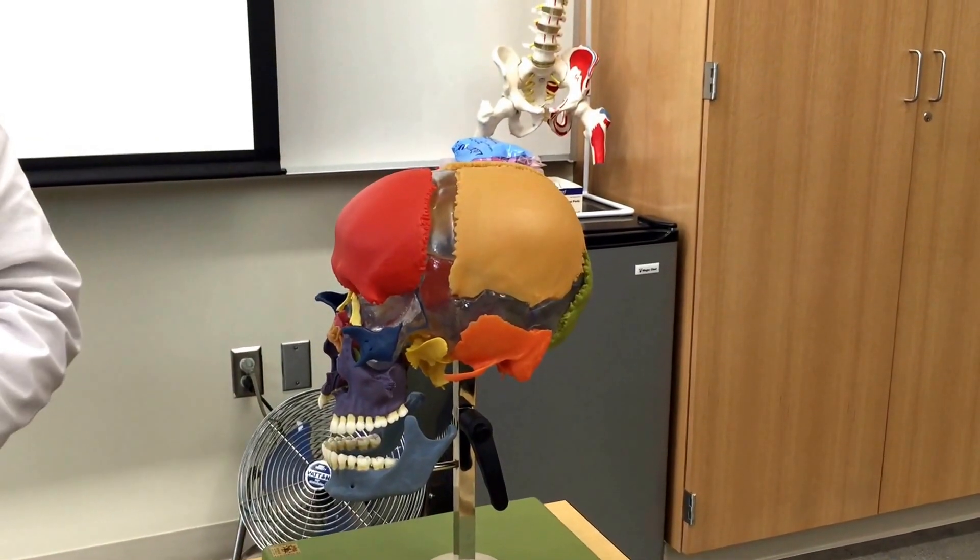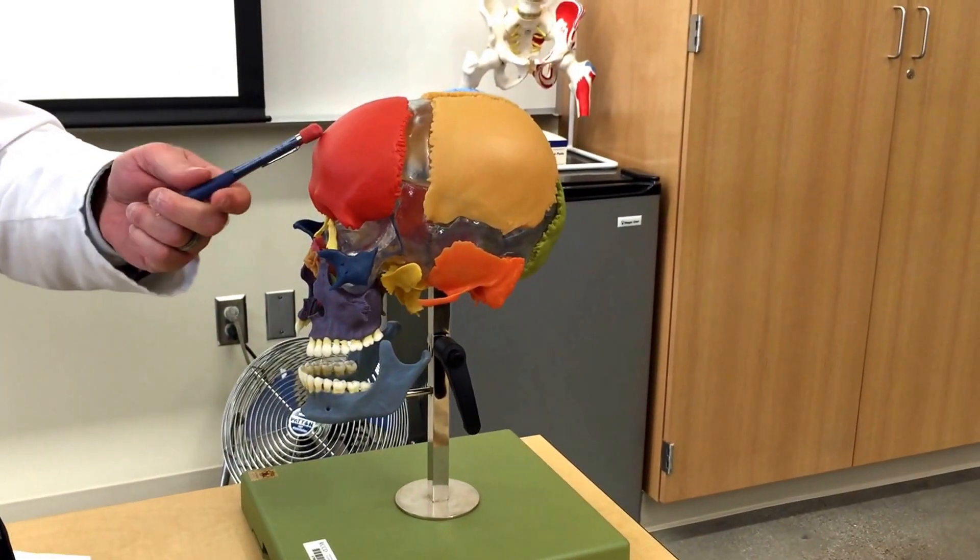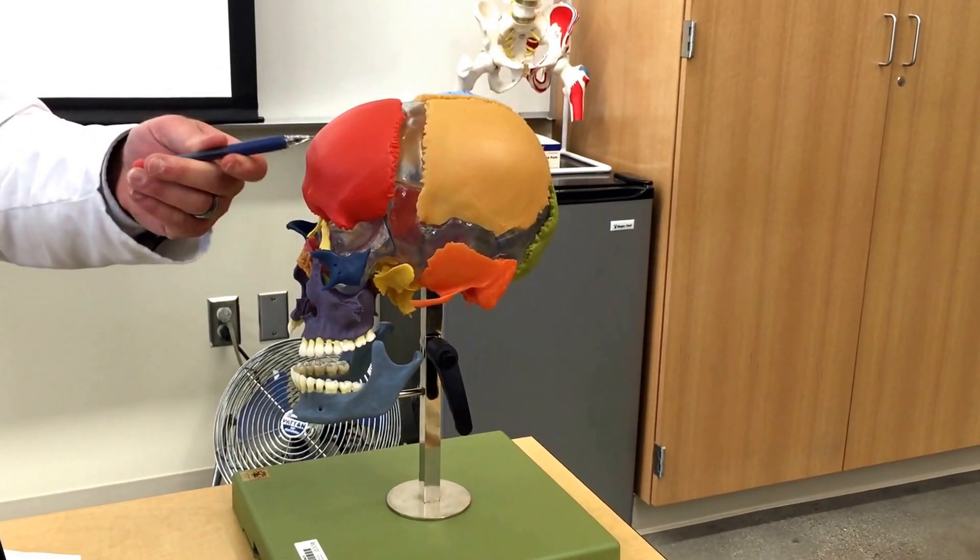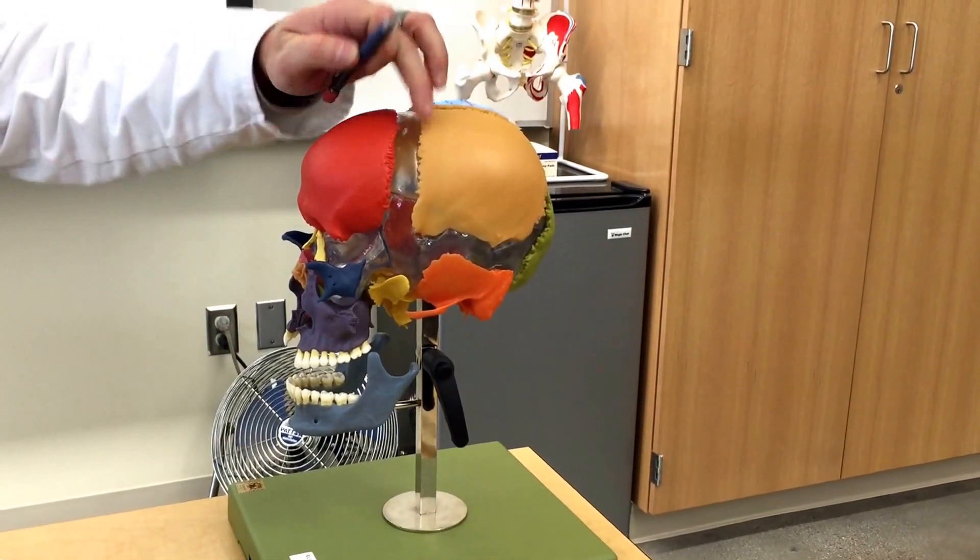Okay, the bones of the skull are widespread and colored in this model and this bone right here is the frontal bone. It's joined to the two parietal bones behind it or posterior to it by the coronal suture.